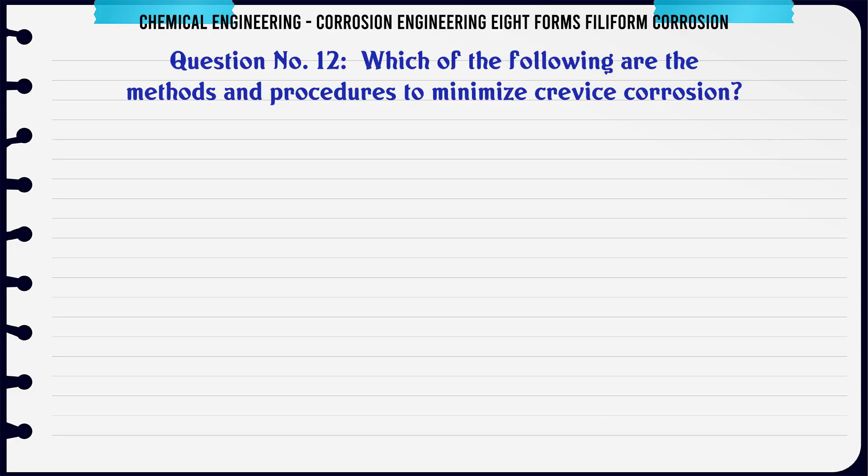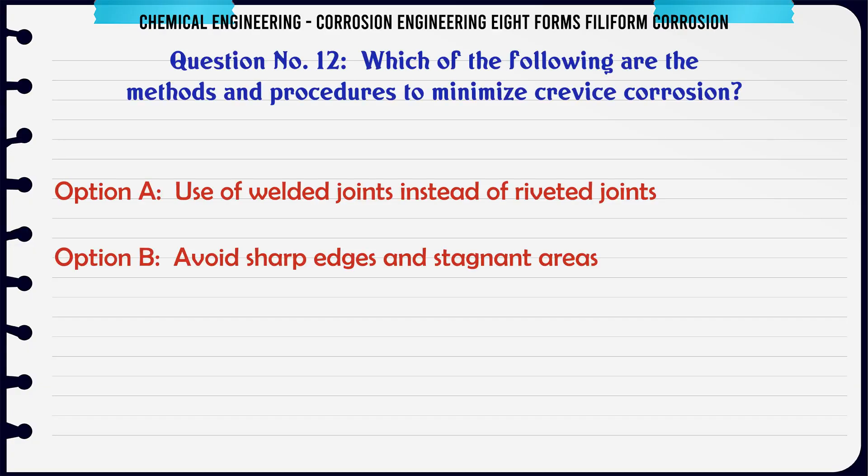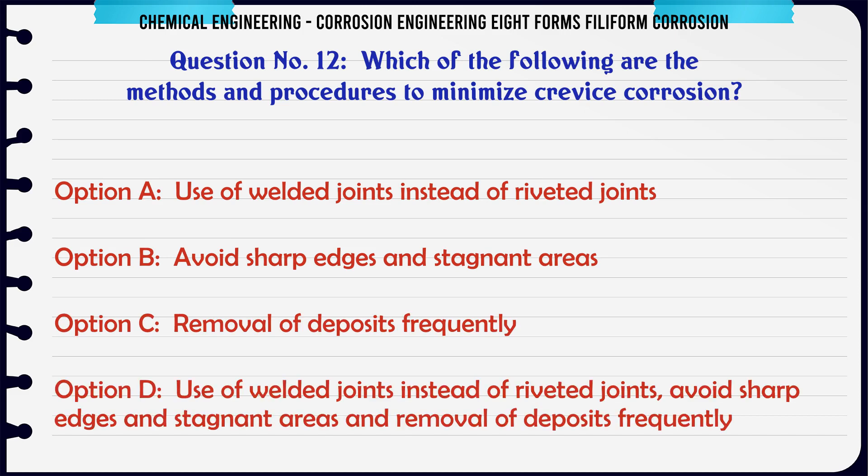Which of the following are the methods and procedures to minimize crevice corrosion? a. Use of welded joints instead of riveted joints. b. Avoid sharp edges and stagnant areas. c. Removal of deposits frequently. d. Use of welded joints instead of riveted joints, avoid sharp edges and stagnant areas, and removal of deposits frequently.